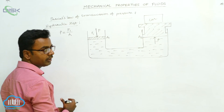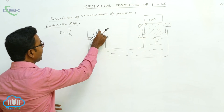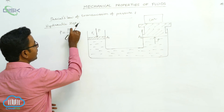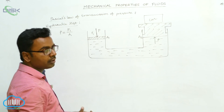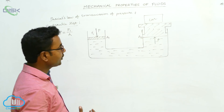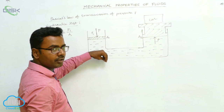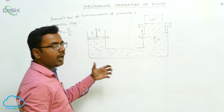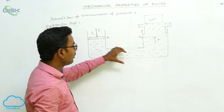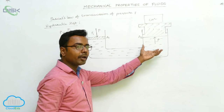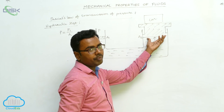We apply force F1 on the cylinder of area A1, so the pressure acting on it is P = F1 / A1. According to Pascal's law of transmission of pressure, this pressure is transmitted equally in all directions, undiminished. So the same pressure P acts on the piston of area A2.